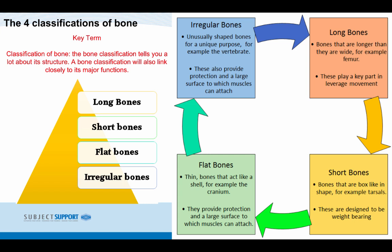Short bones are bones that are box-like in shape — for example, your tarsals, within your fingers and your toes. These are designed to be weight-bearing.